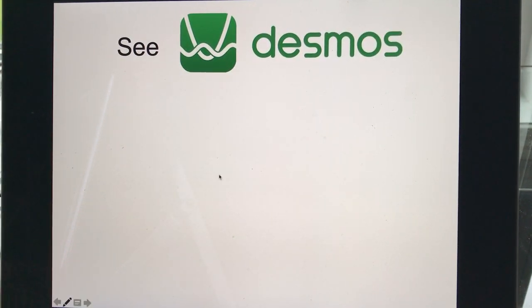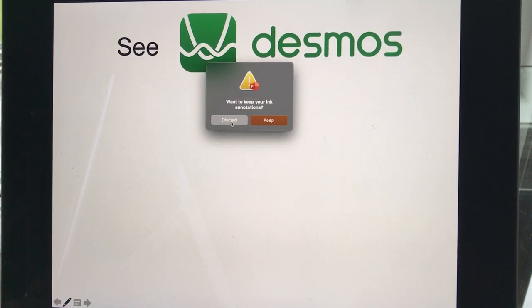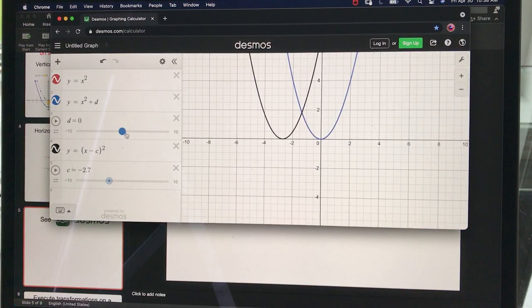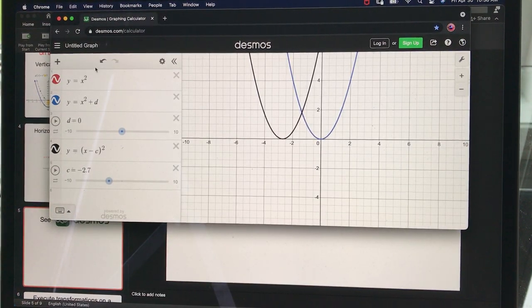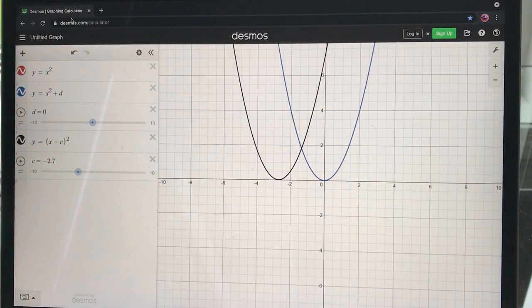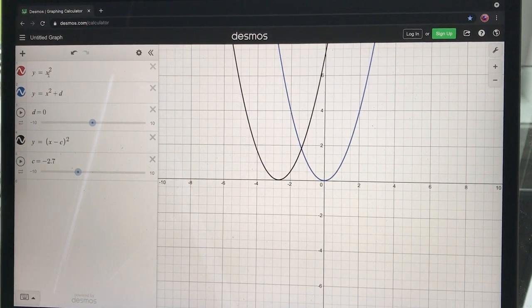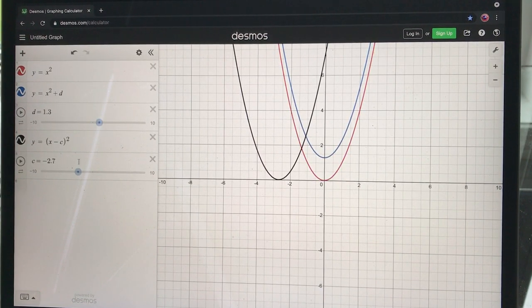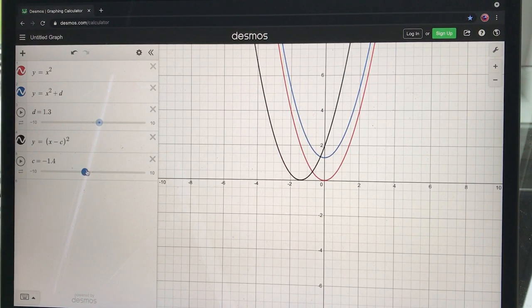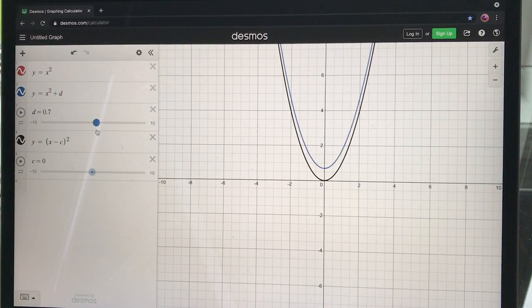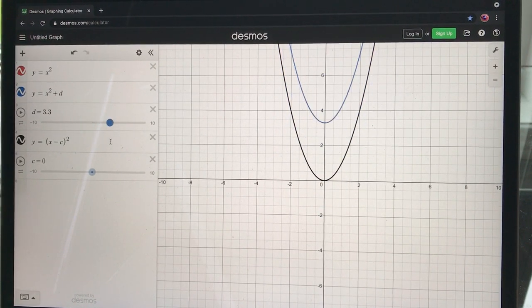What I want to do now is quickly bring up Desmos because we use that to help us see some of these things as well. So here I'll make it full screen. So here we have the basic quadratic y equals x squared and then I have this d here on the outside. I have just a slider so d is zero right now. I'll set this back down to zero too.